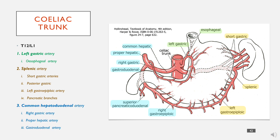The left gastroepiploic anastomoses with the right gastroepiploic, which I'll come to later. The common hepatic artery — also called the hepatoduodenal artery — is the third branch. It supplies the liver via the proper hepatic artery, and gives off the right gastric artery, which anastomoses with the left gastric. It also gives off the gastroduodenal artery, which branches into the anterior superior and posterior superior pancreaticoduodenal arteries, supplying the pancreas from above, as well as the right gastroepiploic.